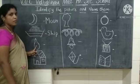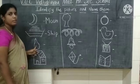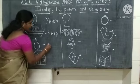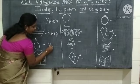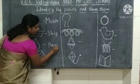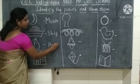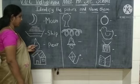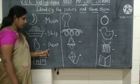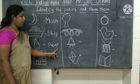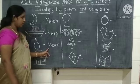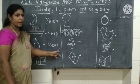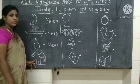What picture is this? This is a pear. What is the spelling of pear? P-E-A-R — pear. What picture is this? This is a pear. What is the spelling of pear? P-E-A-R — pear.